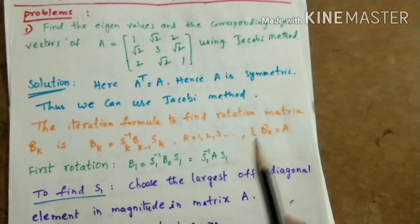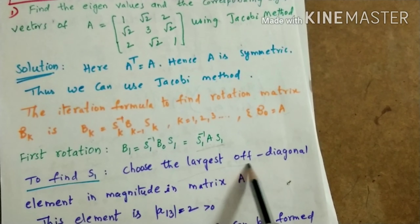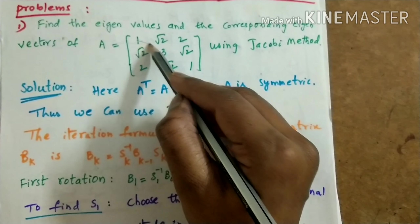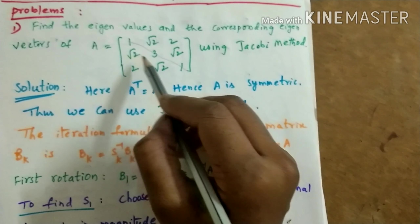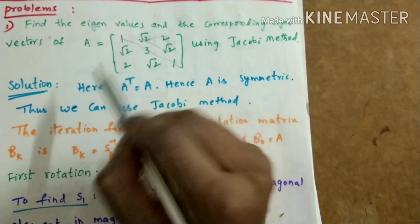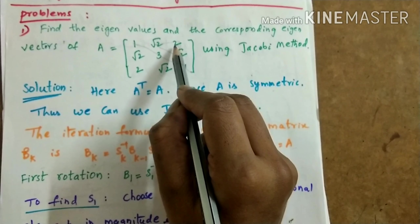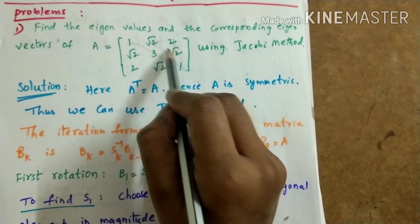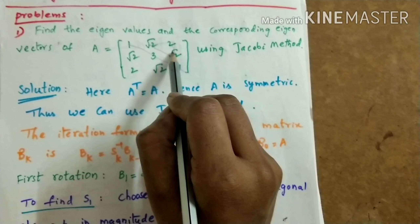Each iteration we need to find the matrix Sk and then find the product Sk⁻¹ Bk₋₁ Sk so that the resultant matrix Bk is in the form of a diagonal matrix. The diagonal elements of Bk are taken as the eigenvalues of the given matrix A. Let us start finding rotation matrices. The first rotation is given by B1 = S1⁻¹ B0 S1 = S1⁻¹ A S1, so we need to find matrix S1.